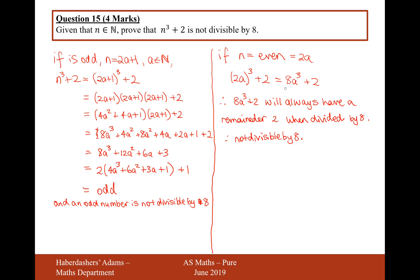We need to just wrap all of this up into one concluding sentence. As our theorem is true for odd and even values of n, it must be true for all values of n, because all values of n can be split into odd or even numbers. That is the answer to this question: 4 marks for question 15.